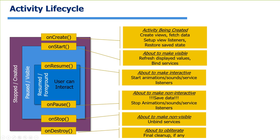Once you move past the stopped/created state, your activity is destroyed or hasn't been created yet. In between state transitions is where the different callback functions are called. When the activity is being created, the instance is created first and then onCreate is called. onCreate is where you set up your user interface — creating your views, fetching a little data to help set up those views, setting up listeners on the views, and possibly restoring some saved state from disk or a database.